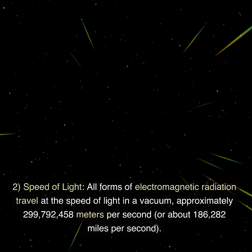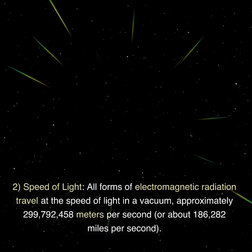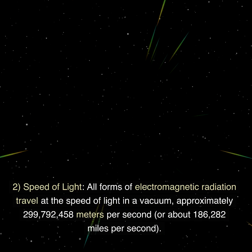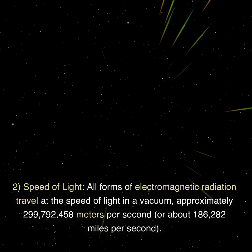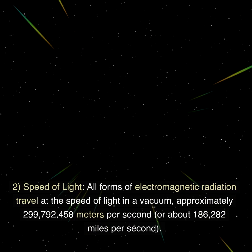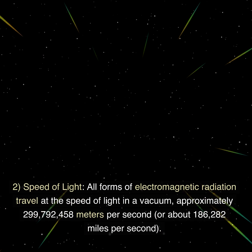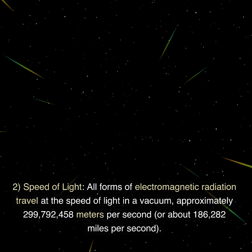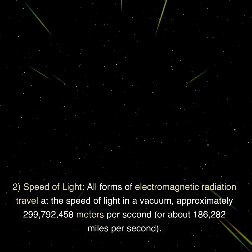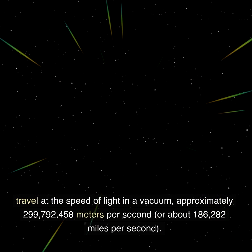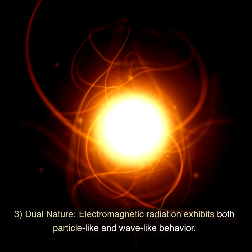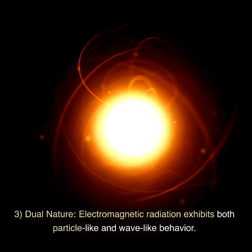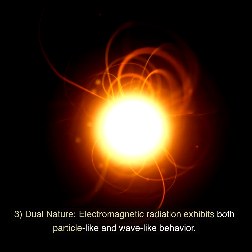Two: speed of light. All forms of electromagnetic radiation travel at the speed of light in a vacuum — approximately 299,792,458 meters per second, or about 186,282 miles per second.